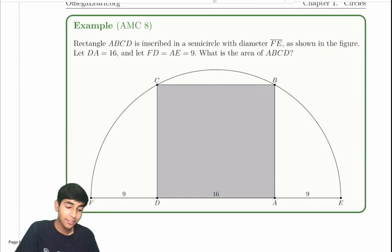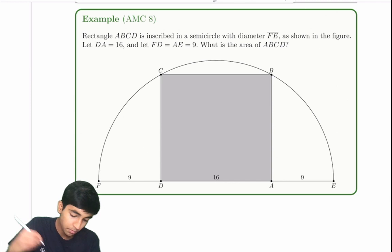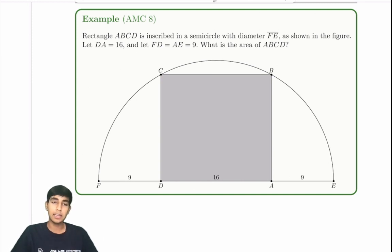Let's explore this example over here that demonstrates circular length very nicely. Rectangle ABCD is inscribed in a semicircle with diameter FE, as shown. Let DA equals 16, FD equals 9, AE equals 9. Find the area of this shaded region ABCD.